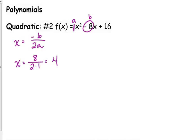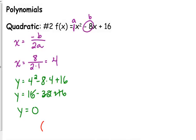We need to find the y-coordinate of the vertex. So we plug in 4 for x into the equation. We get 16 minus 32 plus 16. That's 32 minus 32, that's 0. The y-coordinate is 0. So this has either a maximum or a minimum at (4, 0).